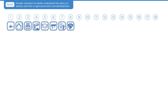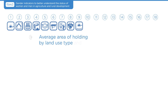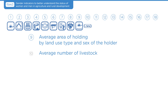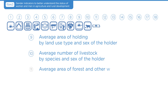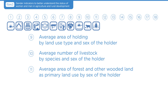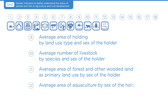Indicators 9 through 12 in the core set refer to: 9. Average area of holding by land use type and sex of the holder. 10. Average number of livestock by species and sex of the holder. 11. Average area of forest and other wooded land as primary land use by sex of the holder. 12. Average area of aquaculture by sex of the holder. These indicators are useful to better explore the gender gap in rural women's and men's access to land and other productive resources.